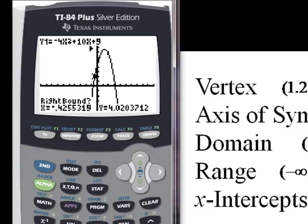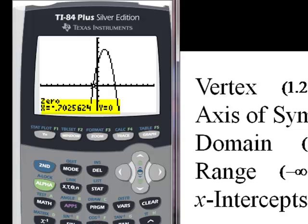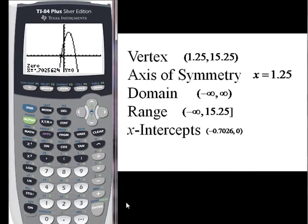That's plenty far enough. I'm to the right of my zero. I hit enter for my right bound. When it says guess, I hit enter. And I've got my first x intercept of 0.7025624. So rounding that off, that's how we'd write our x intercept as a point.